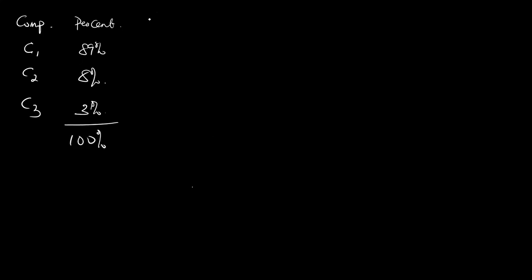Now, the mole fraction, which we call y, for each component: 89 divided by 100 gives us 0.89 for methane; 8 divided by 100 gives us 0.08 for ethane; and 3 divided by 100 gives us 0.03 for propane. This is the mole fraction of each of the components.